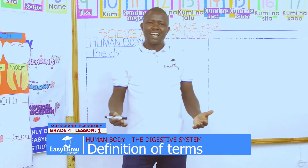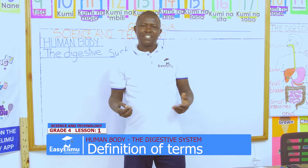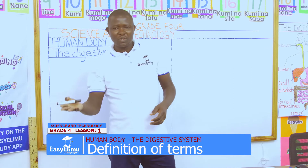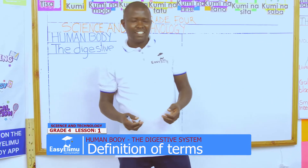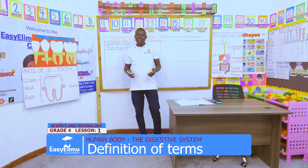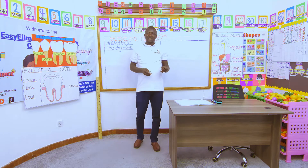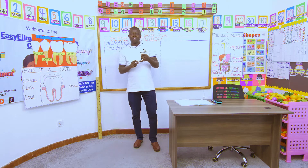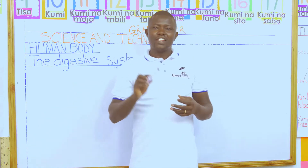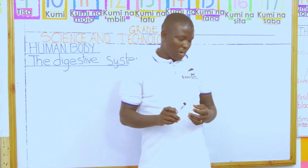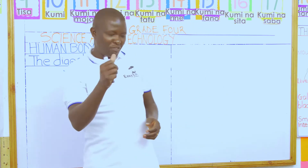First we'll start from where we left the other lesson on handling animals. When handling animals, what are we supposed to do? From Jen, she has said when handling animals we need to put on the protective gear. This includes the goggles, the overcoat, the gloves, and use the forceps when handling small animals so that we can be safe. Thank you very much and clap for yourselves.